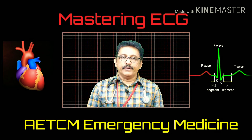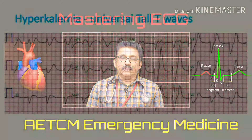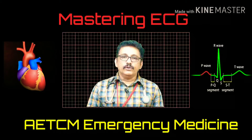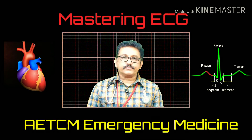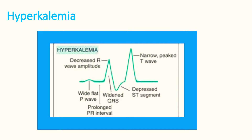Hyperkalemia is classically seen in renal failure. In a hyperkalemia ECG, most leads show very tall T-waves, the QRS complex is wide, and there may be no P-wave or the PR interval may be prolonged. So wide QRS complex with very tall T-waves is an indication for hyperkalemia. In this ECG, you can see the T-wave is taller than the QRS complex — it is very narrow and peaked, which is classically seen in hyperkalemia.